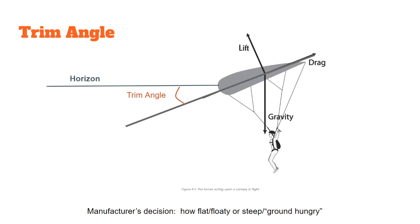The trim angle is determined by drawing a line through the chord — going essentially from the back of the parachute to the front — and looking at that versus the horizon. This is pretty much up to the manufacturer. It's their decision on how flat or floaty a parachute is, or whether it's ground hungry and likes to come out of the sky quickly. There's really not a whole lot you can do to change that trim angle.